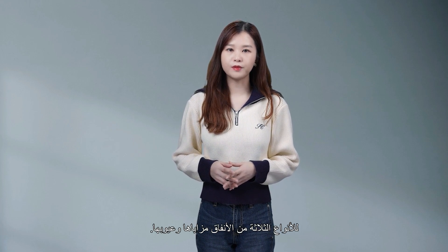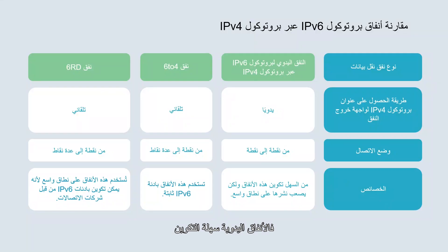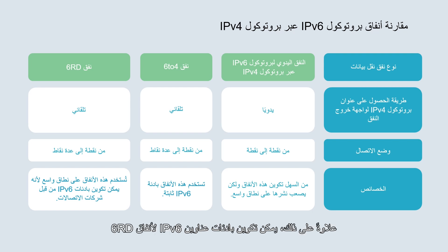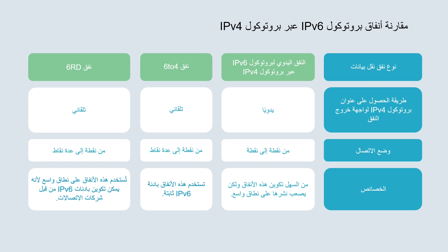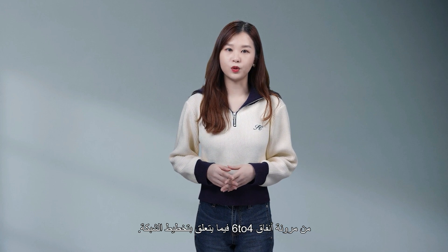The three types of tunnels have their own pros and cons. Manual tunnels are easy to configure but difficult to deploy on a large scale. In contrast, automatic tunnels are more complex to configure but easier to deploy on a large scale. Beyond that, the IPv6 address prefixes of 6RD tunnels can be configured by carriers, making 6RD tunnels more flexible in network planning than 6to4 tunnels.